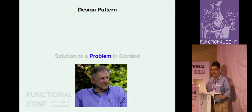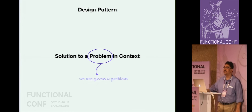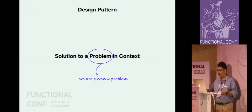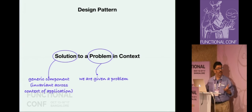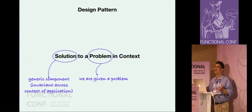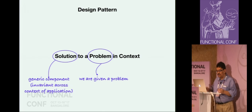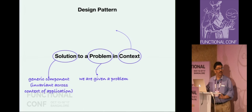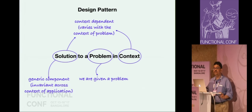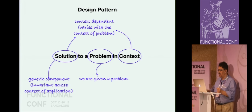We have a solution, a problem, and a context. The problem is given to us - we do not have any choice. The solution itself has two components. The first part is the generic component which is invariant across the context of the application - this is the reusable part across all contexts, and this will be the algebra itself as we will see. The other part of the solution is context dependent, which we need to implement separately for every context. This aspect of reusability in design patterns has a parallel in the world of mathematics.